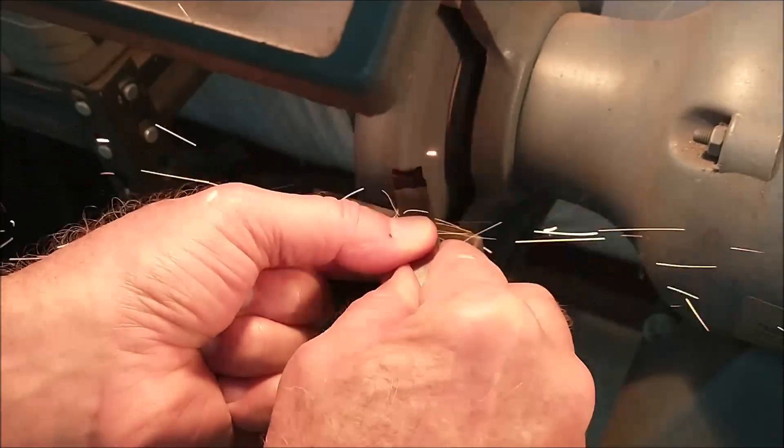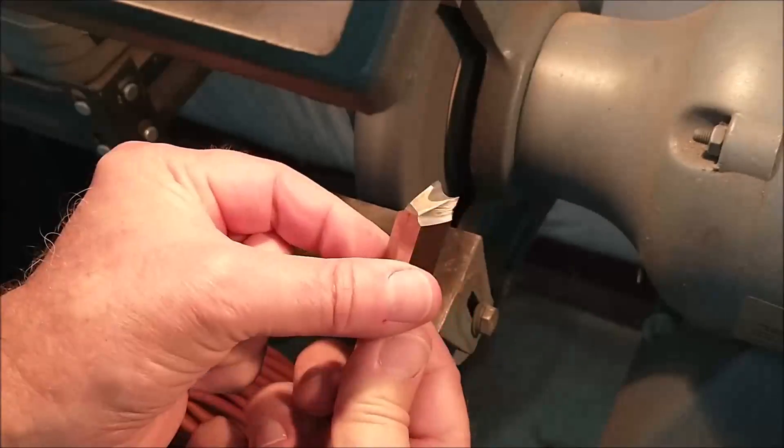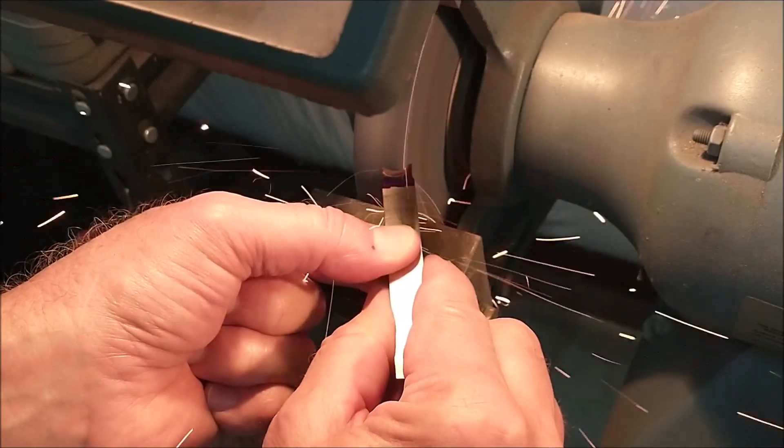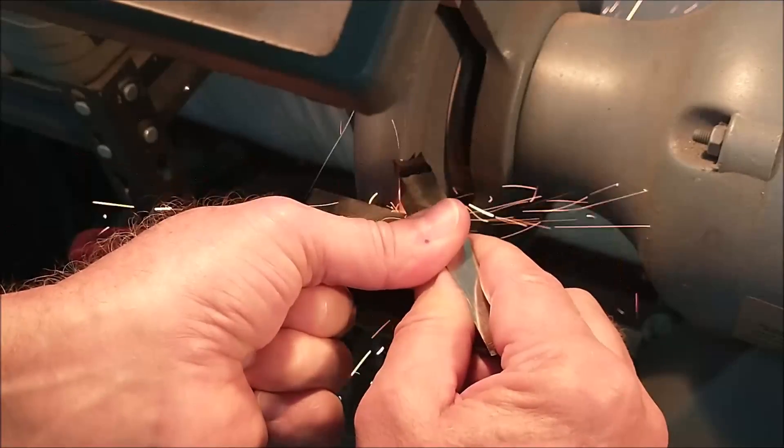Anybody that has watched any of my videos knows that my belt grinder has a coarse wheel on the left, a fine wheel on the right, and the tables are set at different angles specifically for a rough and finish grind on the tools.